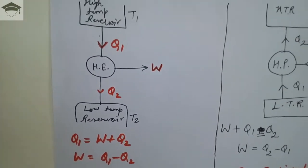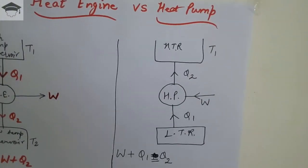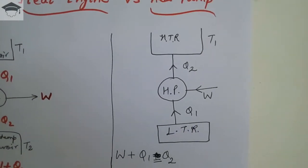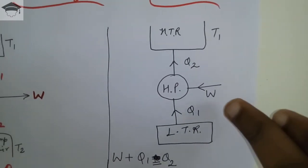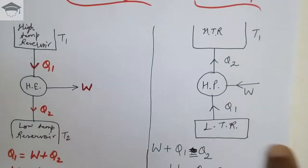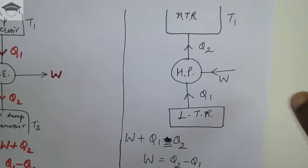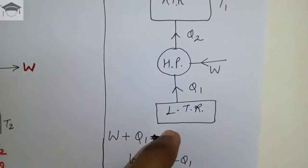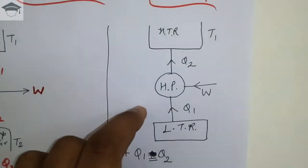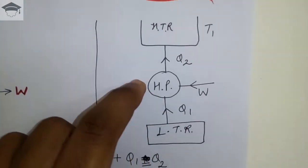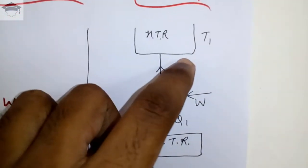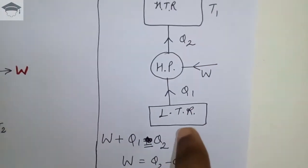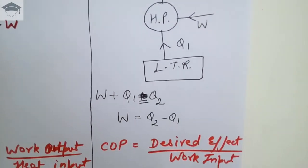Now let us talk about the heat pump. A heat pump is a device which takes work input — here we have to supply external work, whereas in a heat engine we were getting work out. When we supply work, the heat pump takes heat from a low temperature reservoir at T2 and pumps it to a high temperature reservoir at T1, and the amount of heat pumped is Q2. By balancing: work done W plus Q1 is equal to Q2.